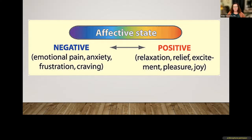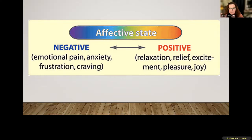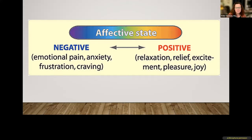Affective state is an important thing to think about. When we talk about our mental health and that mental state, we think of the range between negative and positive experiences, and we want to do everything we can to maximize the positive pieces — exposure to things like relaxation, feelings of relief, excitement, and pleasure — while doing what we can to minimize emotional pain, anxiety, frustration, and craving for things that we really need but don't have, like food, water, and shelter.